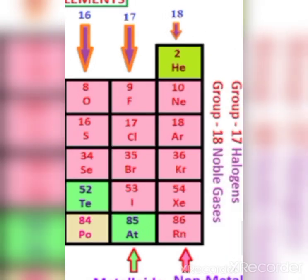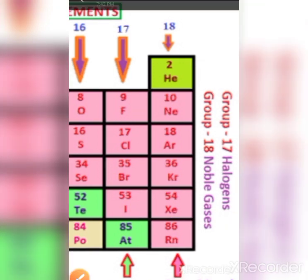In the 17th group, the halogen family, fluorine, chlorine, bromine, and iodine are non-metals. Only one metal is present in the 17th group, and that is astatine. In the 18th group, all the elements are non-metals.